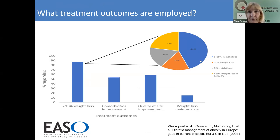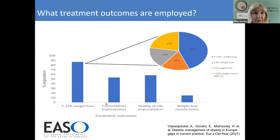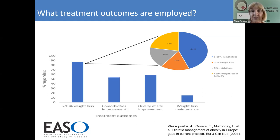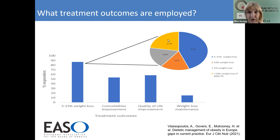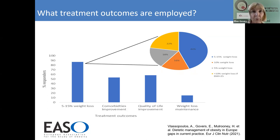About half of all answers dealt with the improvement of comorbidities and quality of life, but weight loss maintenance is not very commonly addressed, so there are improvements to be made in the future. You can also see the differences in weight loss goals: sixteen percent target ten percent weight loss, and twenty-two percent target more than ten percent weight loss when the BMI is over 35. There are big differences in all aspects of obesity management.